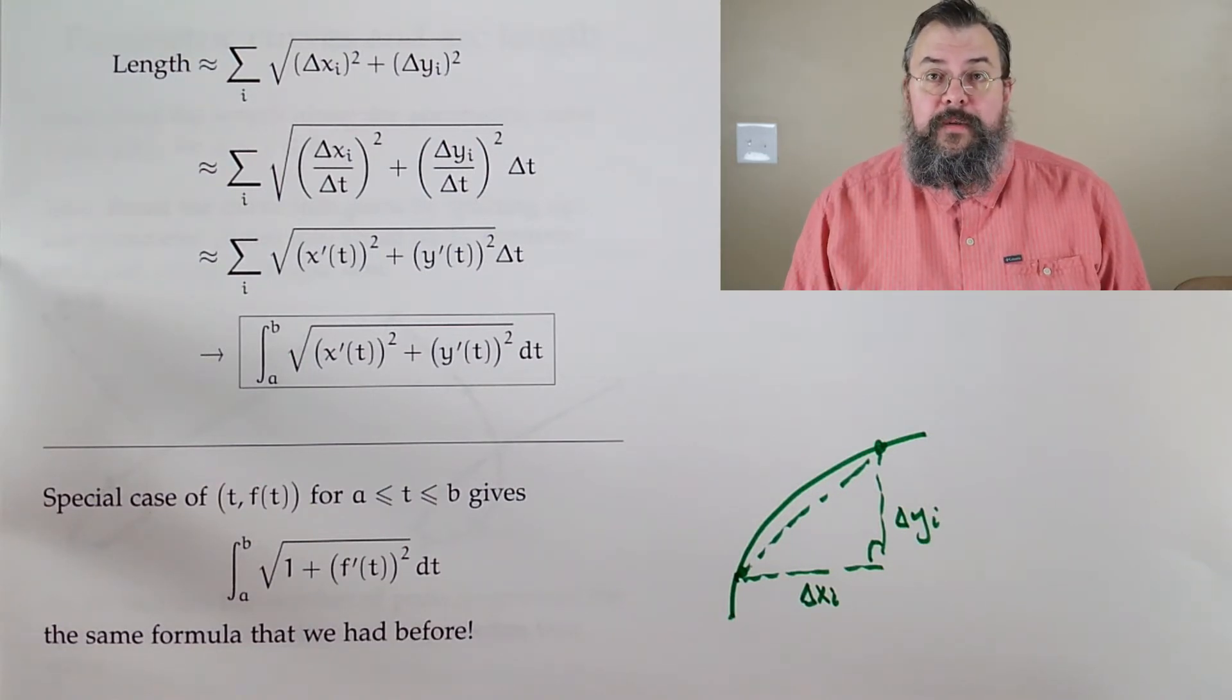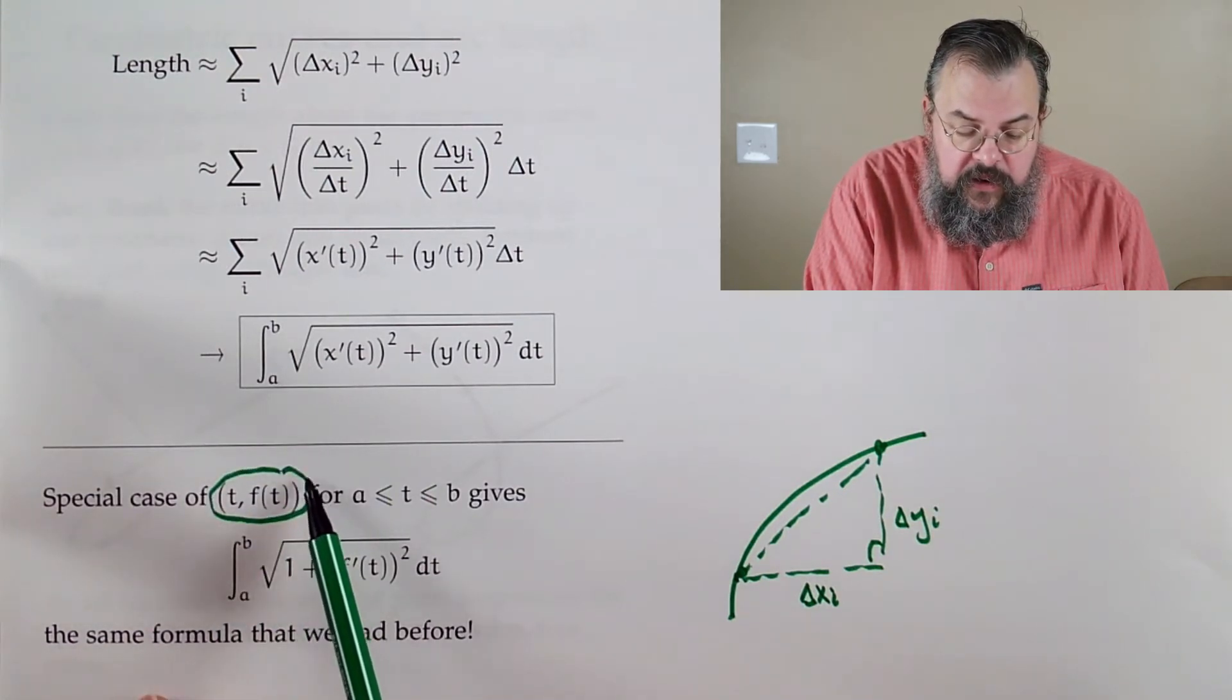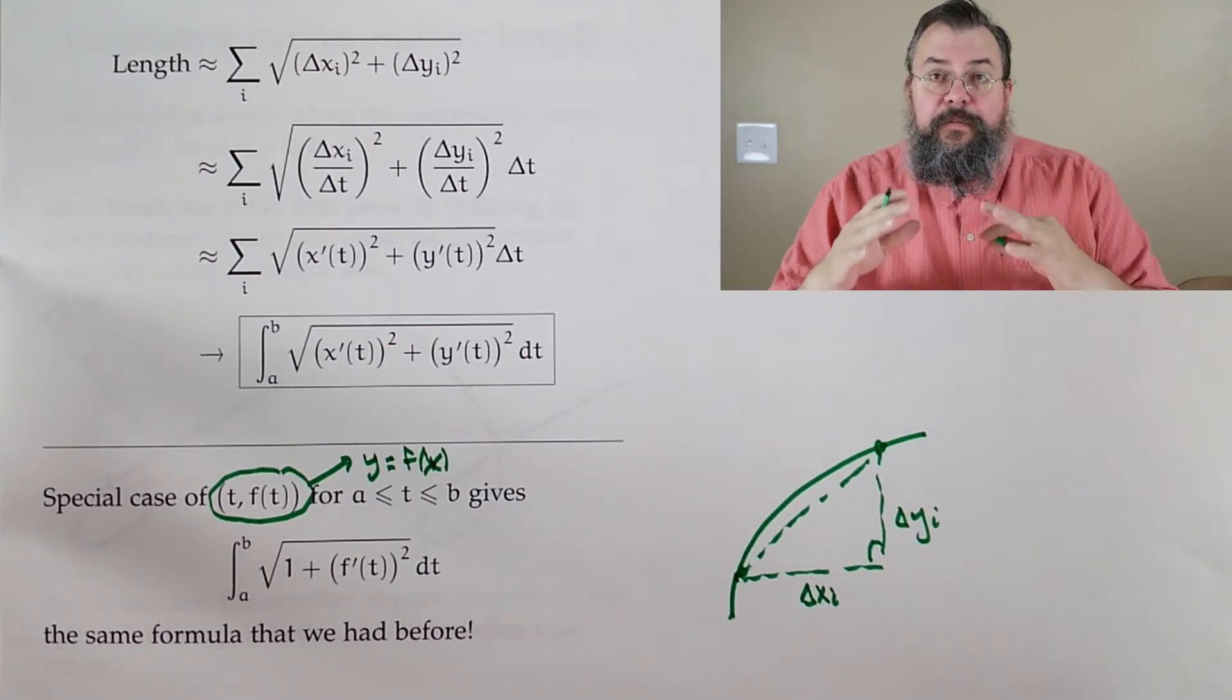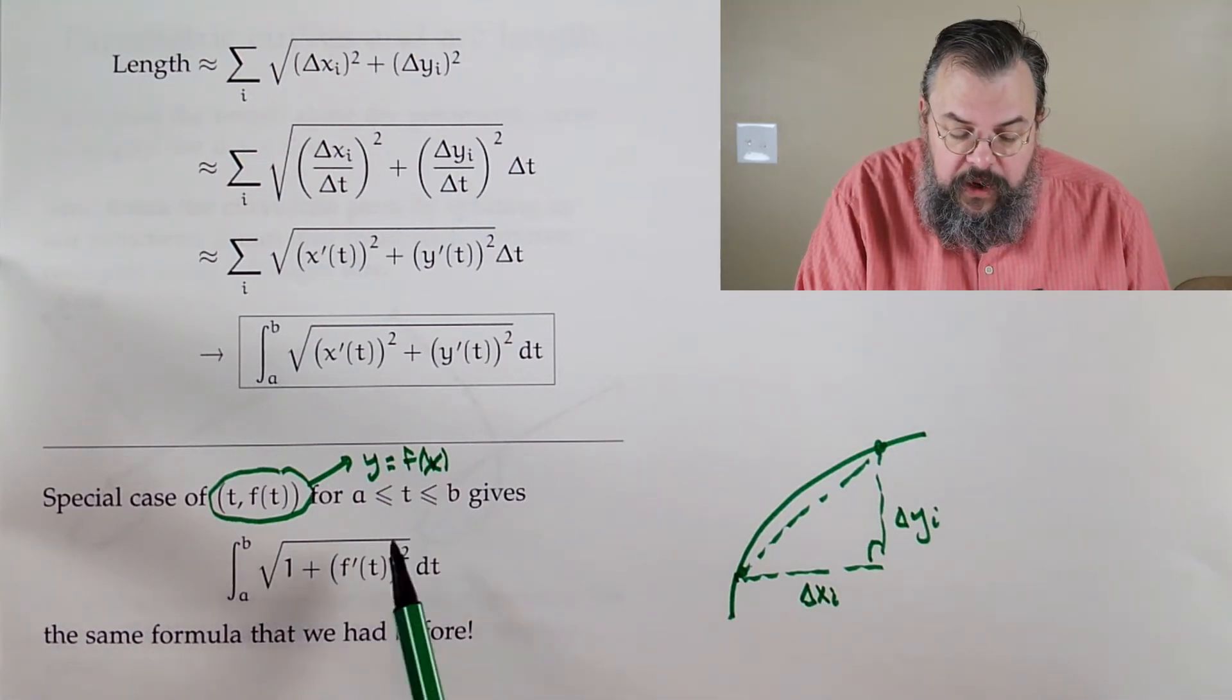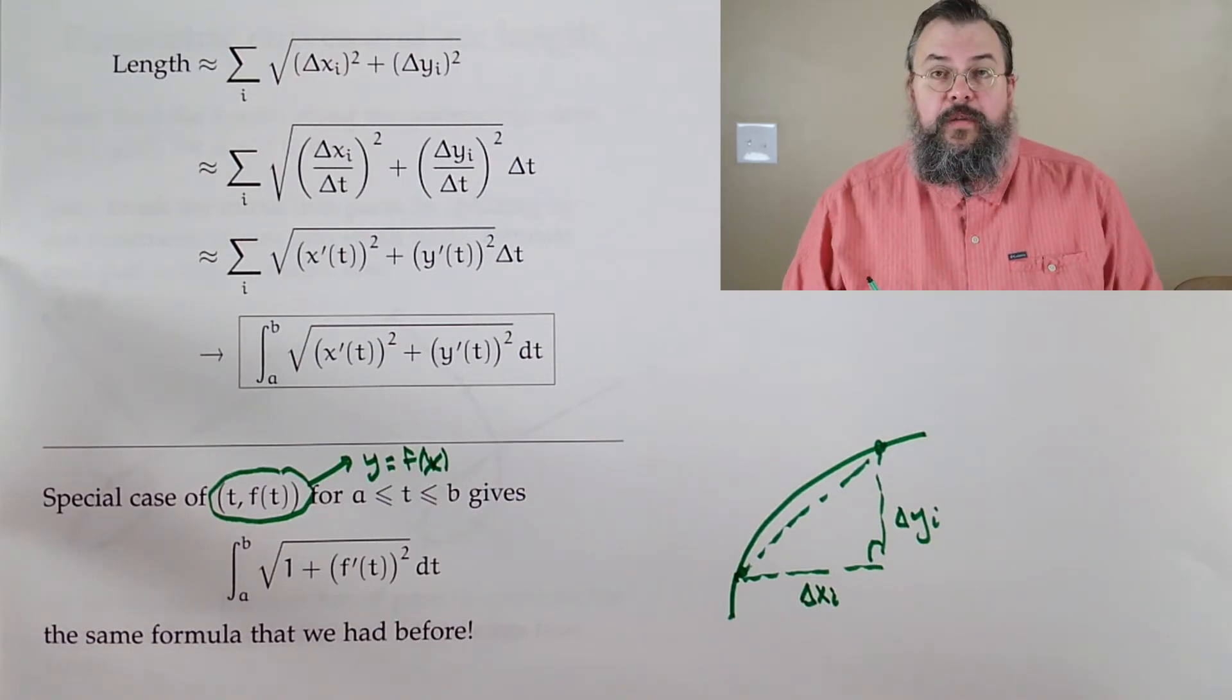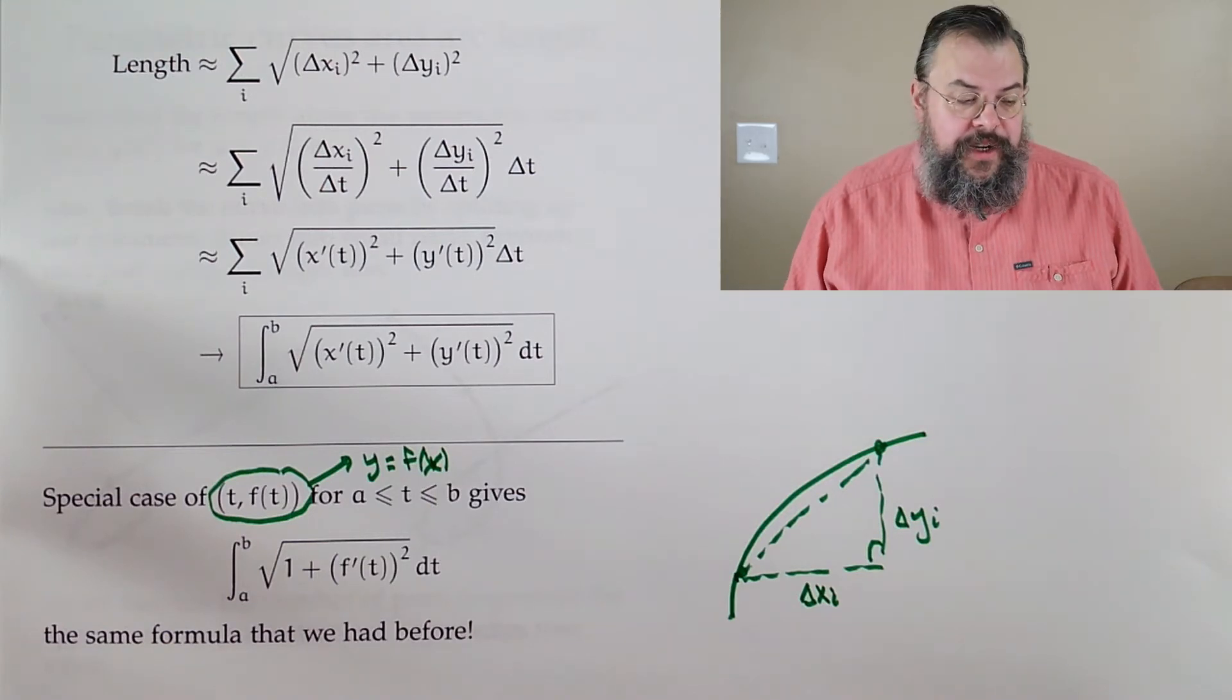Now we've learned an arc length formula before, namely the form Y equals F of X. You might remember that formula. It was 1 plus F prime squared, take the square root of all of that, and you integrate it. That's exactly the same thing that happens. Square root 1 plus F prime squared. In other words, it reduces to what we did before, which is good. It should reduce to what we did before because we should be consistent. Consistency is a sign that we're doing something right. If we weren't getting a consistent answer, something would be very strange.